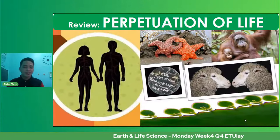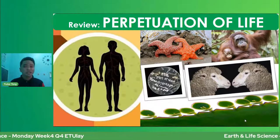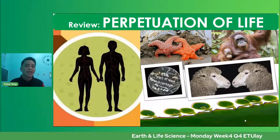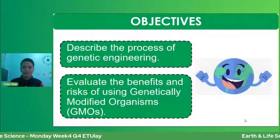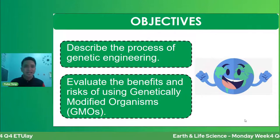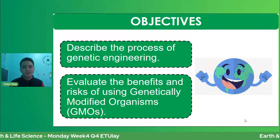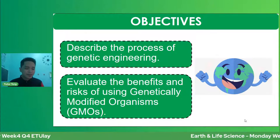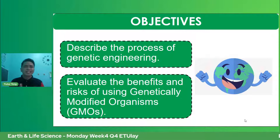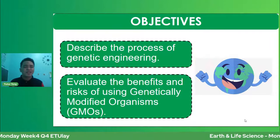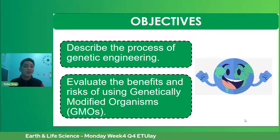Just to refresh your minds — last session, we had our session for perpetuation of lives. Specifically, we discussed about asexual reproduction and sexual reproduction ng mga representative organisms sa animal kingdom. For this week, itong ating mga session objectives: first, we have to describe the process of genetic engineering. And of course, we have to evaluate the benefits and risks of using genetically modified organisms or GMOs. We'll weigh the risk and the benefits na binibigay ng mga genetically modified organisms.